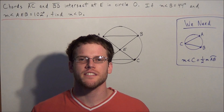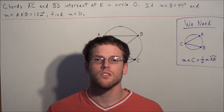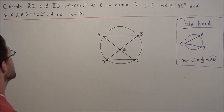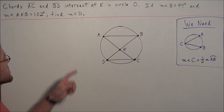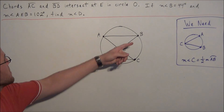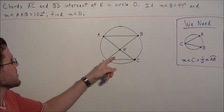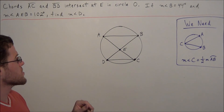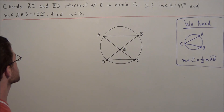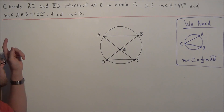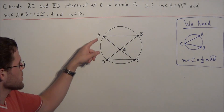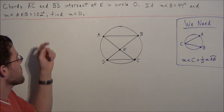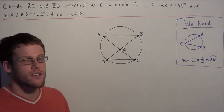Hi, my name is Vincent and today I want to take a look at inscribed angles. We have the problem: chords AC and BD intersect at point E in circle O. If the measure of angle B is 44 degrees and the measure of angle AEB is 102 degrees, we want to find the measure of angle D.